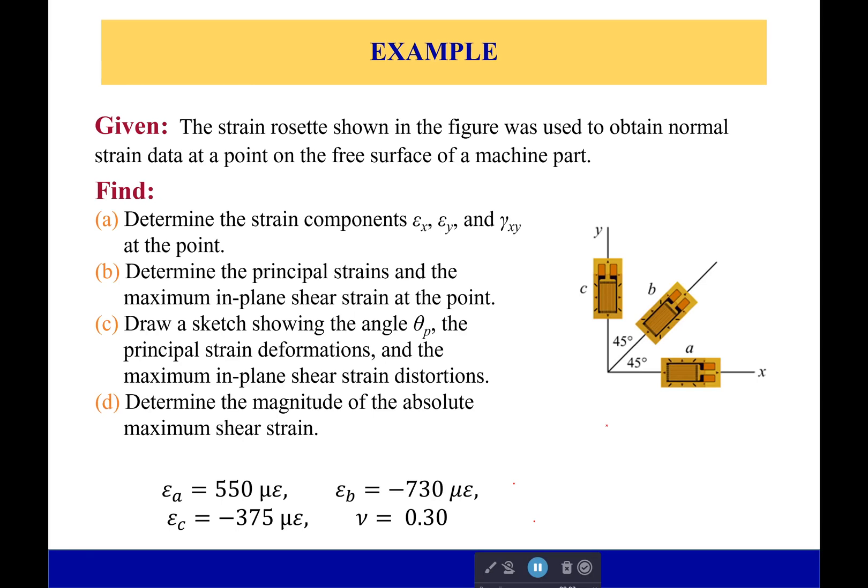Hello everyone, welcome back. So this time we're going to be looking at a more realistic example of our transformation equations. So what you have right here, this is a strain rosette. It's used to find the principal strains in a single test. So you'll put this on the free surface of a machine part.